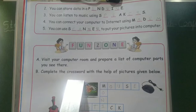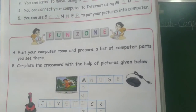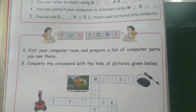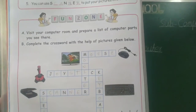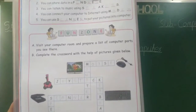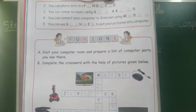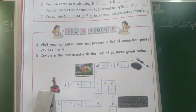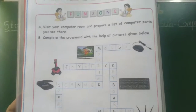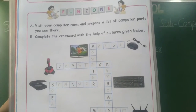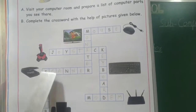Complete the crossword with the help of the pictures given. This is a monitor — M-O-N-I-T-O-R. This is a mouse — M-O-U-S-E. This is a joystick. This is a keyboard. This is a scanner. This is a modem. And this is a speaker — write each one in the crossword.